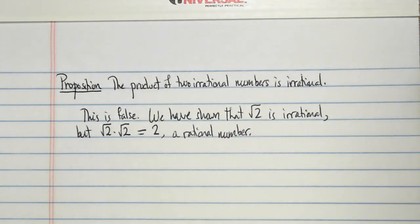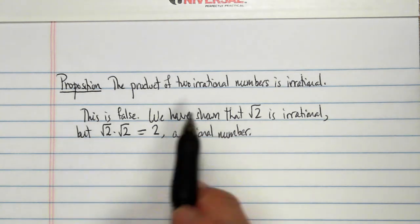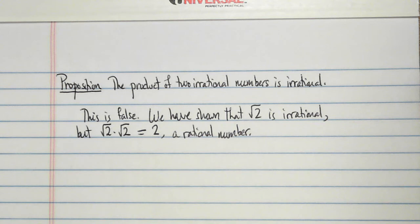So it is possible for the product of two irrational numbers to be a rational number, so this statement is false.